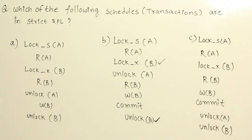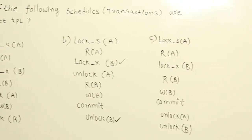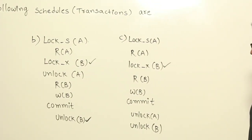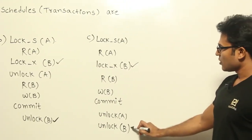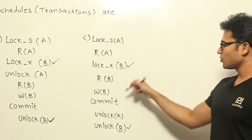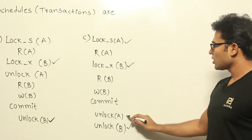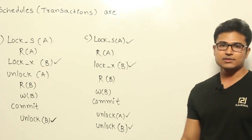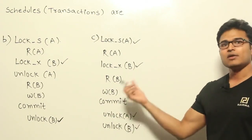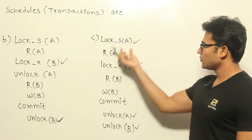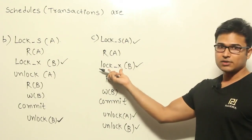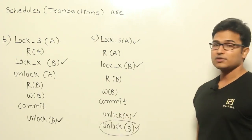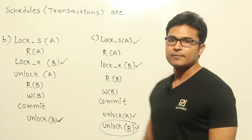Now if you look at this one, what are the exclusive locks? The exclusive lock is here, and if you observe, exclusive lock B is unlocked after commit — therefore it is strict. One more point: since this shared lock is also unlocked after the commit, this is also rigorous. But what we are interested in is strict — by definition of strict, if you have any exclusive locks you are supposed to unlock them after commit, and since you are doing that here, these two are definitely strict.